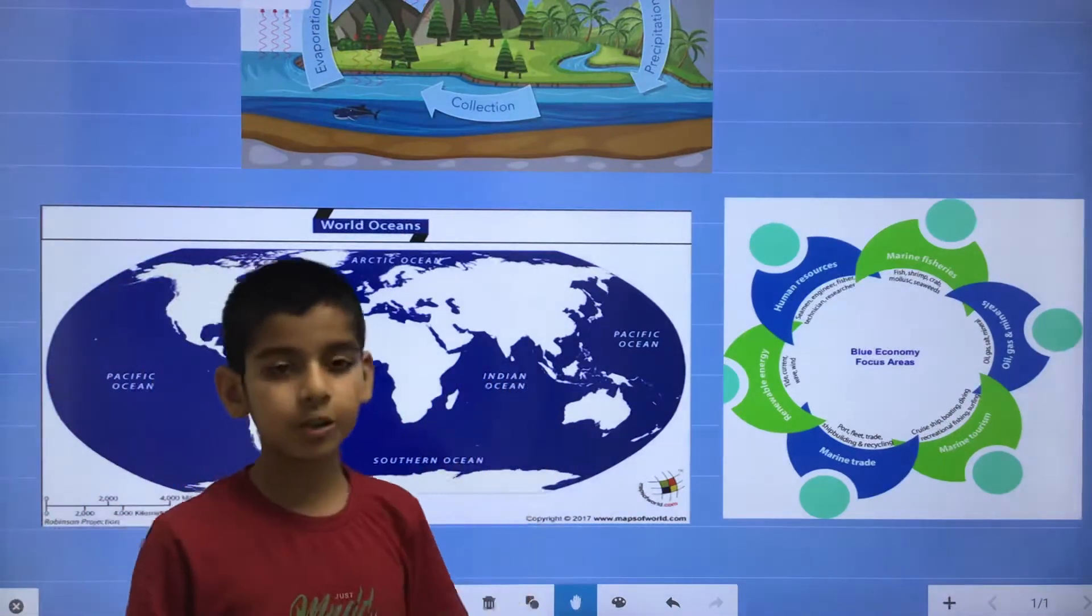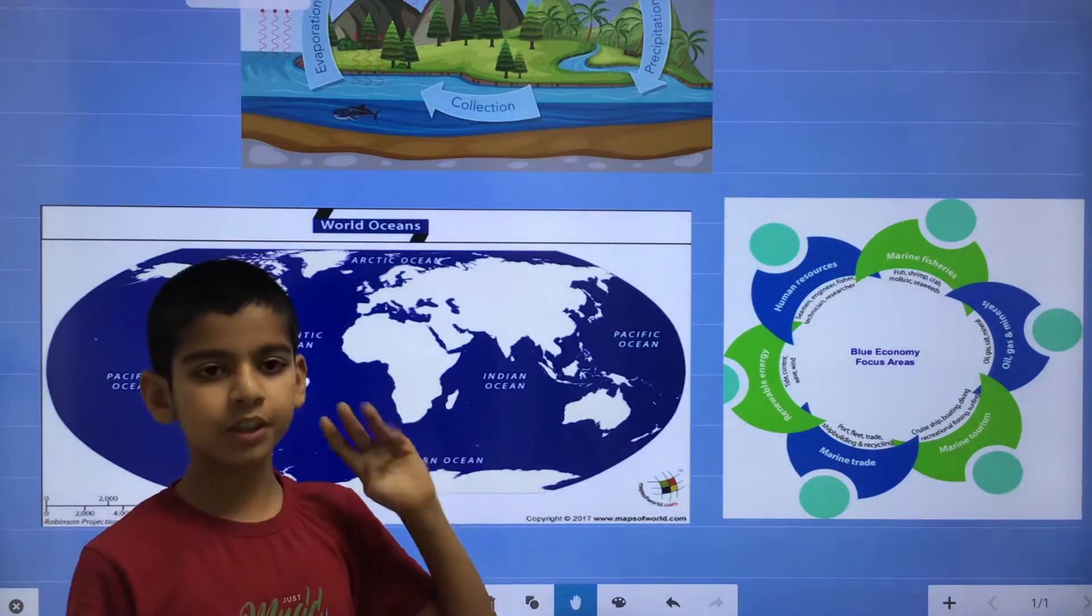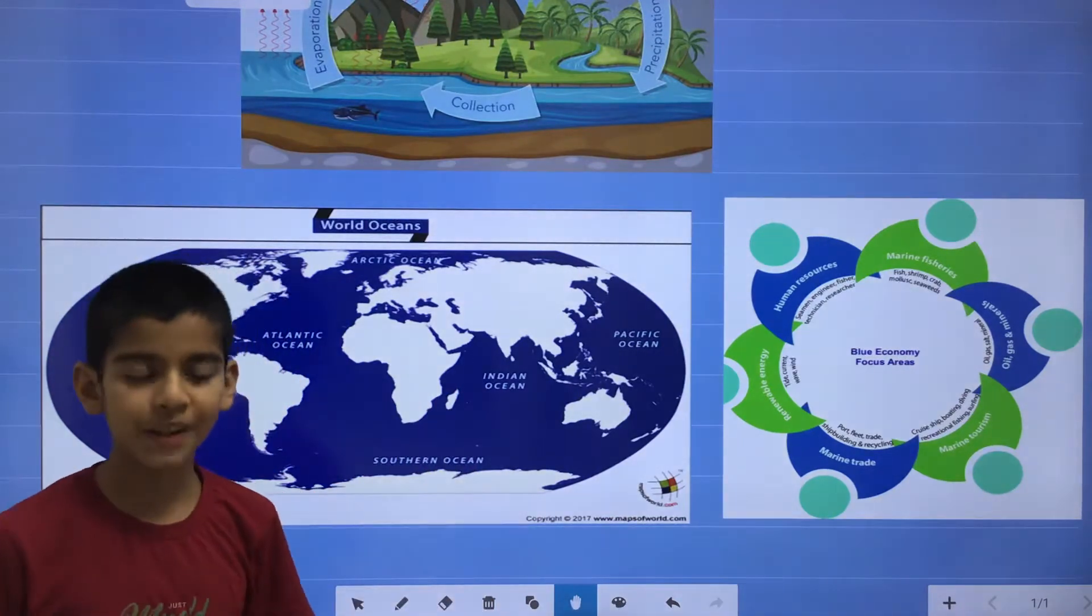Now, there are five types of ocean, Pacific Ocean, Atlantic Ocean, Arctic Ocean, Indian Ocean and Southern Ocean.